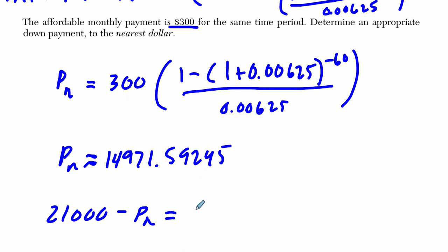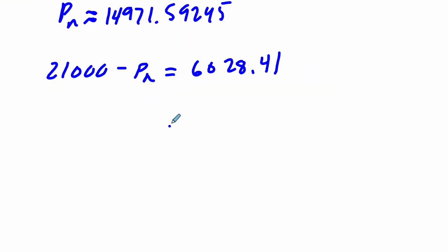And that is, if you do that difference, you get about $6,000. I'm going to leave the dollar sign out, $6,028.41. And they had some other change I believe, but they want it to the nearest dollar. So that's going to be $6,028. This is the down payment that you should make.